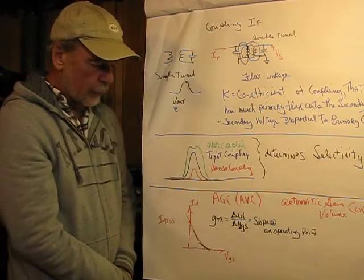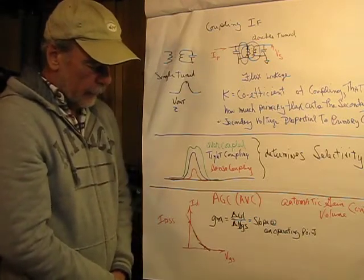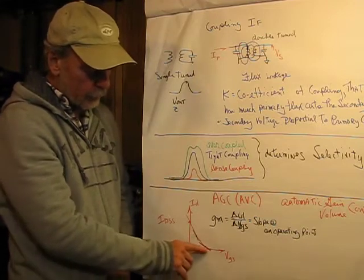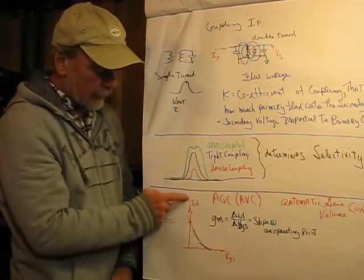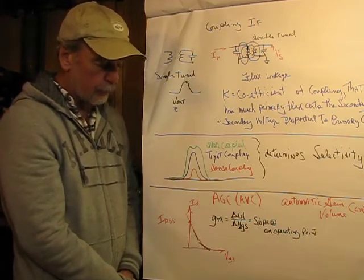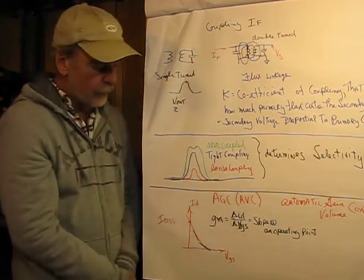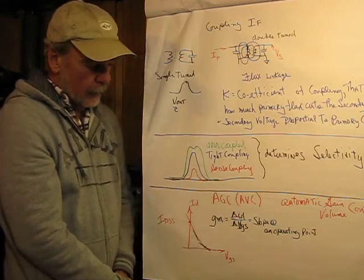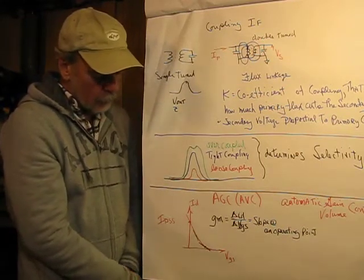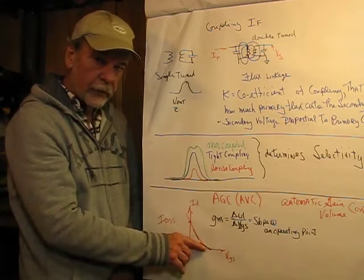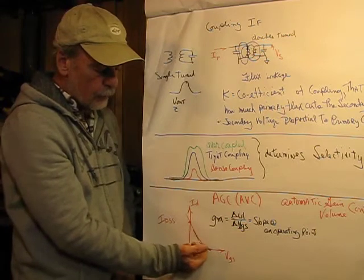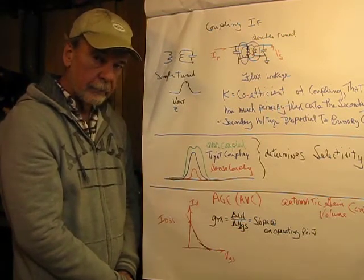So the last thing we need to talk about is the automatic gain control, sometimes called the automatic volume control. And what I'm going to do is take the voltage that we had on the other diagram and feed it back into a P channel FET that has a characteristic that looks like this. So this is V gate to source, and this is the drain current. And what we're interested in is the transconductance. Now, the transconductance is how the drain current, which is going to be feeding, say this, is controlled by the gate to source voltage. And what we can kind of see here is that the instantaneous slope of this is going to determine what that gain is. So if it's operating down here, it's going to be in the low gain section. If it's operating up here, it's going to be in the high gain section. So the AGC AVC voltage feeds back and moves the operating point up and down on this curve that affects its gain.